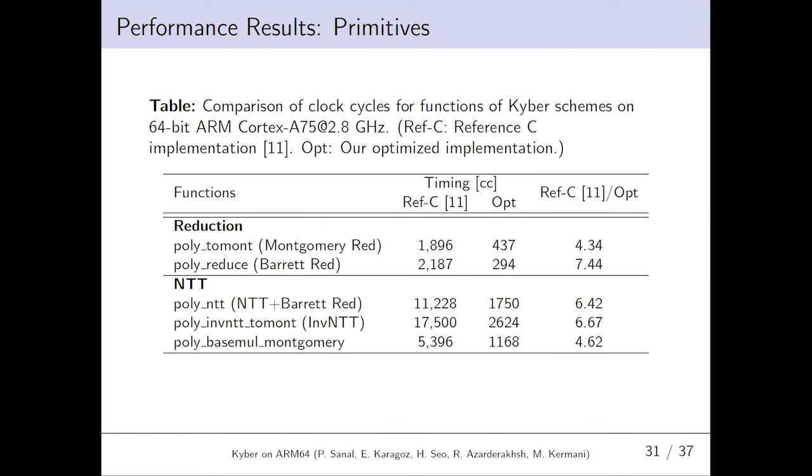Performance results for primitives. This table shows reference and optimized implementation performance results for arithmetic functions in Kyber. Notice that these results are the same for all Kyber variants because each Kyber variant has the same number of polynomial coefficients. As seen in there, our implementation improved Montgomery reduction by 4.32 times, Barrett reduction by 7.44 times, NTT by 6.42 times, inverse NTT by 6.67 times, and BaseMUL by 4.62 times.